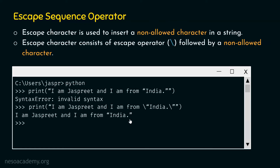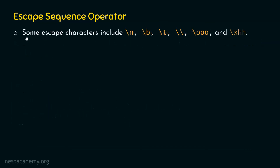Apart from escaping double quotes, we have some common escape characters we must know: `\n` stands for new line, `\b` stands for backspace, `\t` stands for tab, `\\` (double backslash) allows us to insert a backslash in our string, `\OOO` to insert an octal number, and `\xHH` to insert a hexadecimal number.